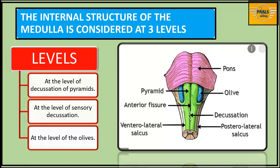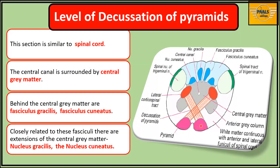The internal structure of the medulla is considered at three levels. From the lowest level, which is at the level of the pyramidal decussation, to the highest level, which is at the level of the olive. Between these two levels, we have an intermediate level, which is at the level of sensory decussation. We are going to start from the lowest level, which is at the level of pyramidal decussation.